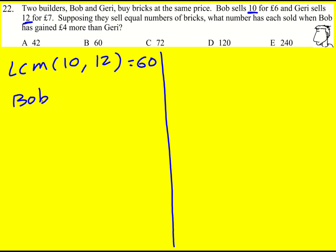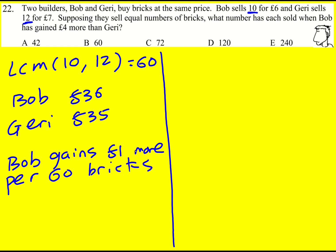So Bob to sell 60 would be 36 pounds, just times through by 6. And then Geri to sell 60, times by 5, so 35 pounds. So Bob gains one pound more per 60 bricks. Therefore we can see to get four pounds more, we just times through by 4. You would have to sell 240 bricks. That's a nice approach.